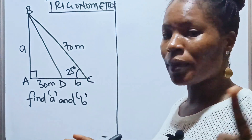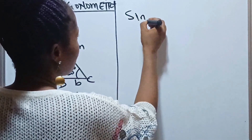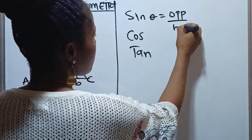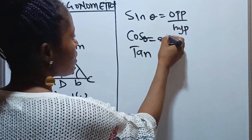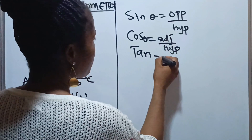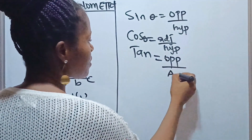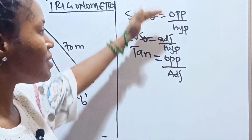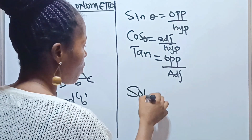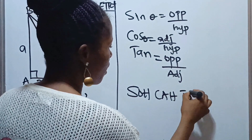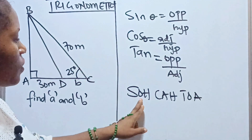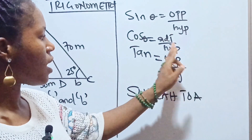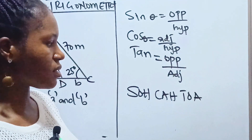First, you need to note the three basic trigonometric ratios: sine, cosine, and tan. Sine theta is equal to opposite over hypotenuse. Cosine theta is equal to adjacent over hypotenuse. Tan theta is equal to opposite over adjacent. There is an acronym to remember these ratios: SOH CAH TOA — sine is opposite over hypotenuse, cos is adjacent over hypotenuse, tan is opposite over adjacent.